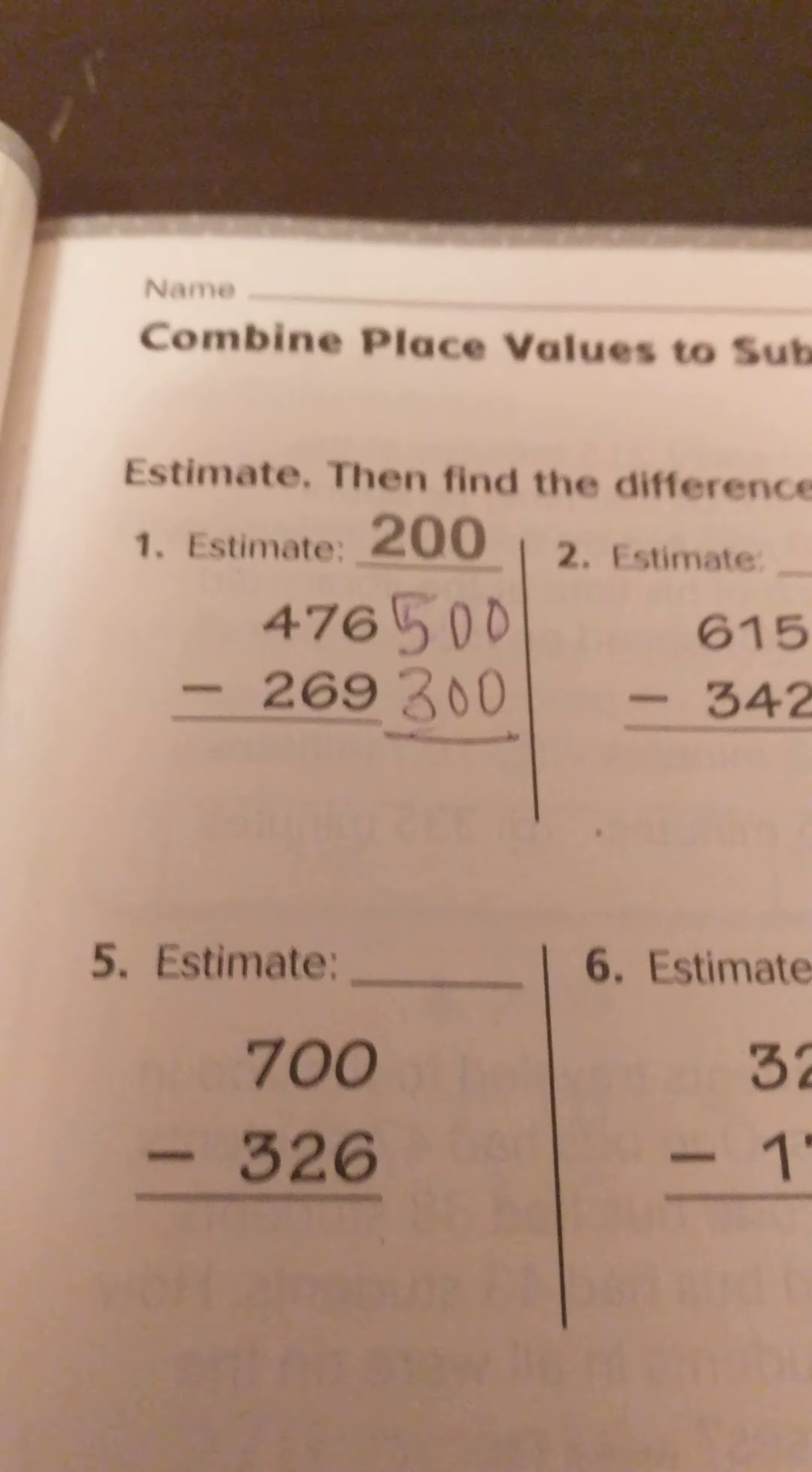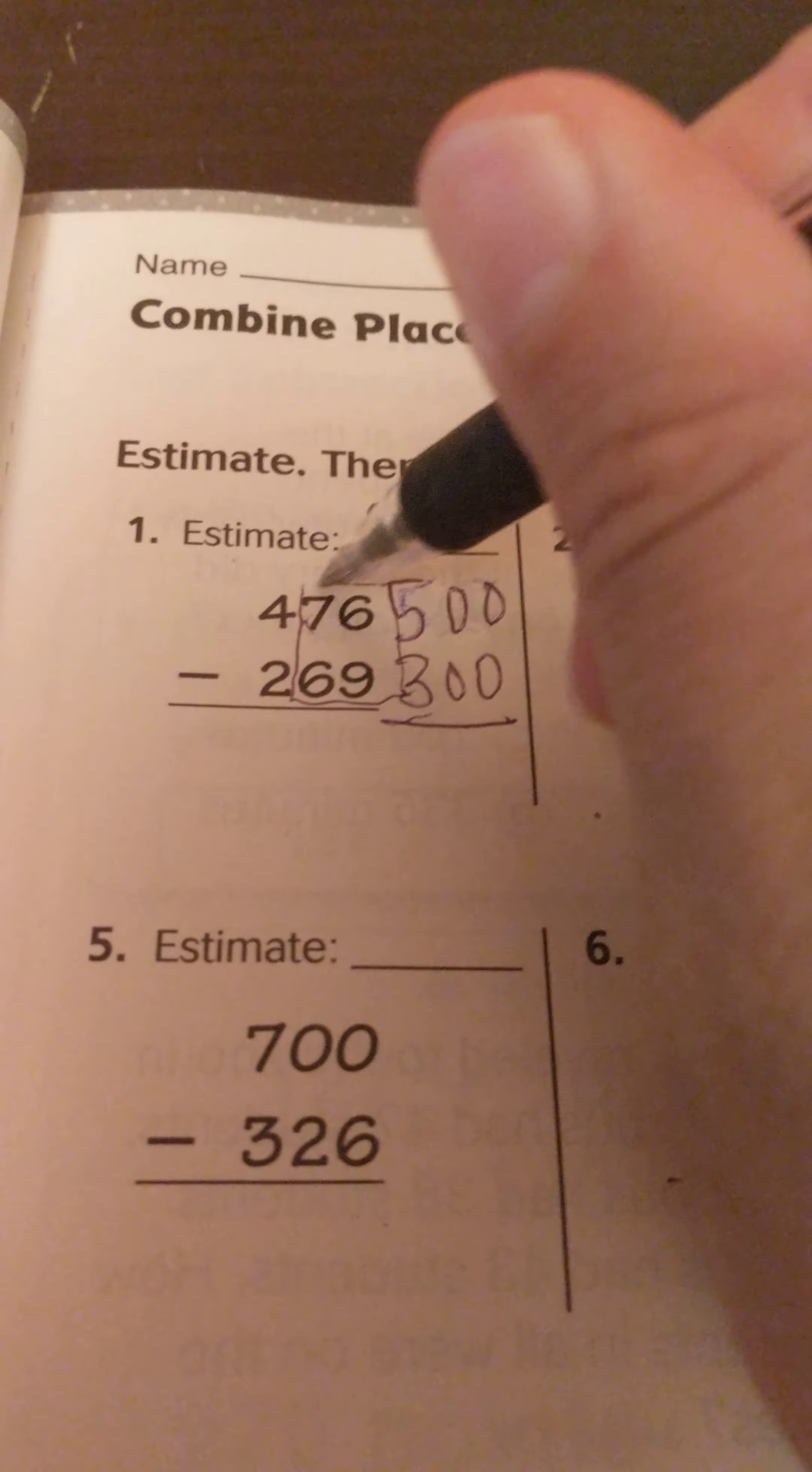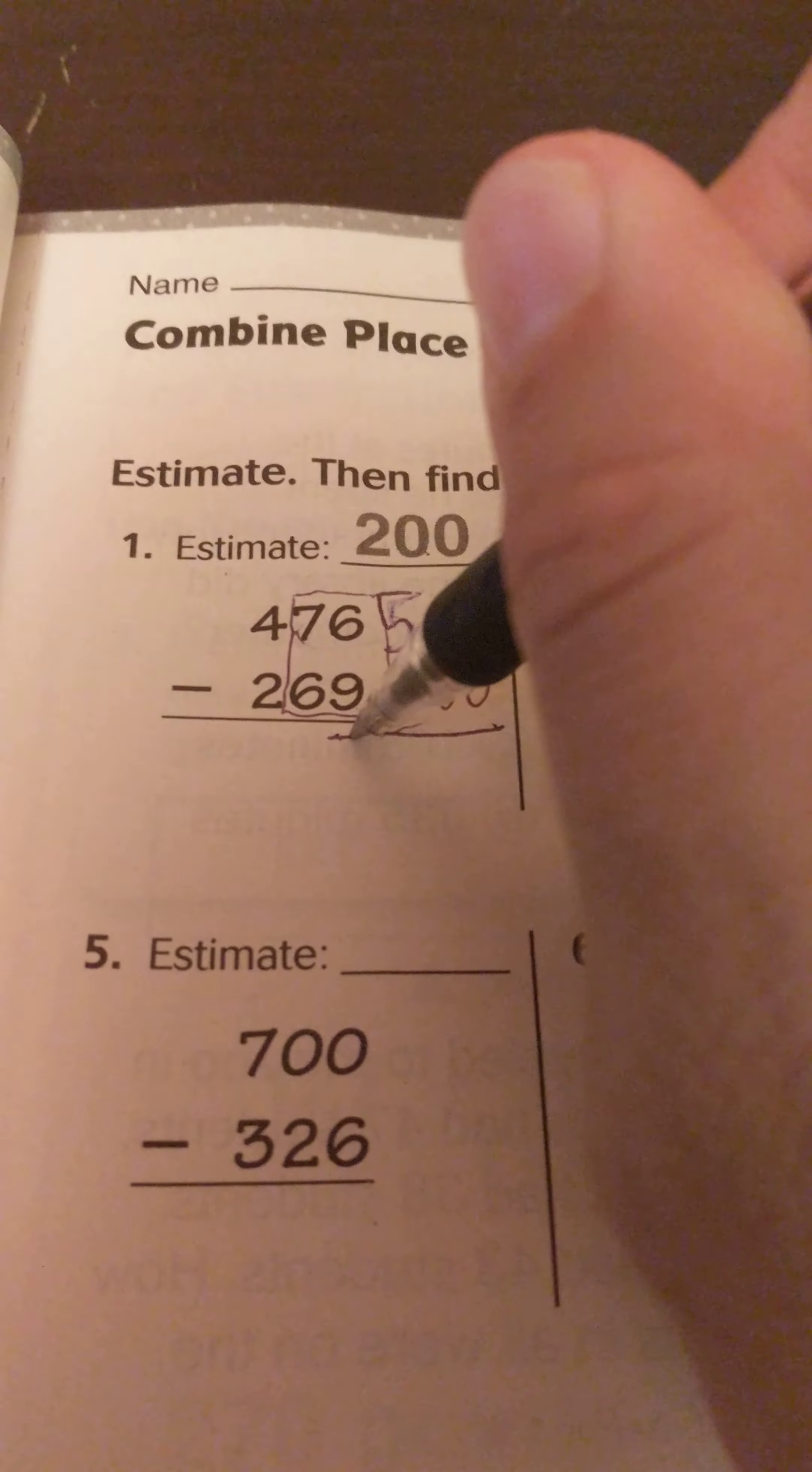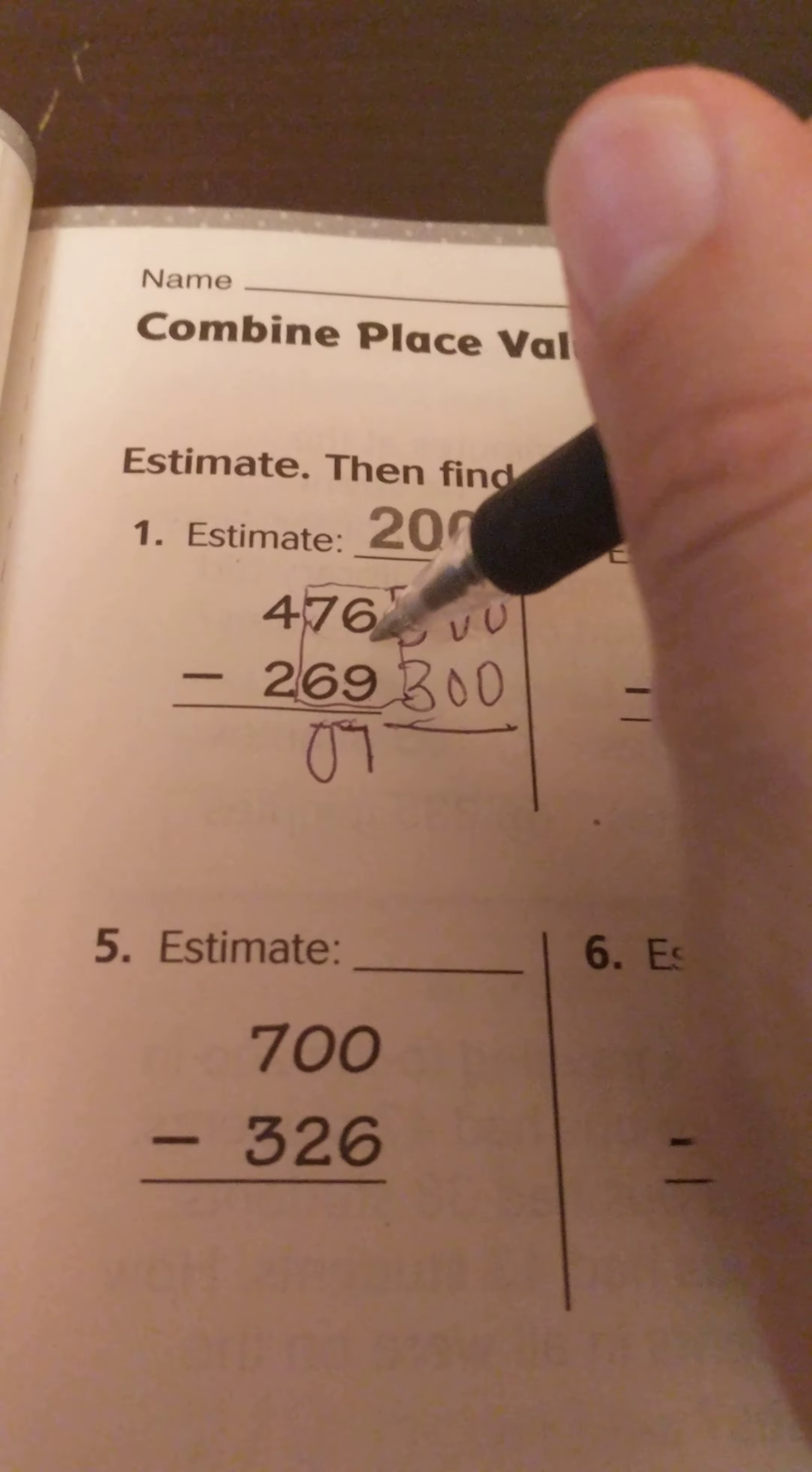Alright, so it says combined place values. What they mean by that is if you're looking at these, like this right here you have 76 minus 69. I know if this is 70 and 76 minus 70 would be 6, this would be one more which would be 7. So I could put 7 here and I know this would be a 0. Now I'm going to show you this also regrouping to double check our answers.